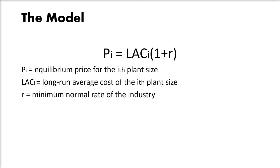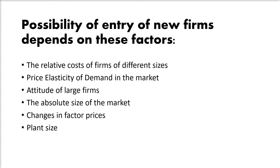If the entrant firm has a scale plant larger than the smallest firm in the industry, it would bring down the price, because the model assumes that established firms would continue to produce the same output. The additional output of the entrant would lower the price and the minimum rate of profit in the industry. The possibility of entry depends on several factors. As long as the scale plant of the entrant is smaller than that of the least efficient firm in the industry, the limit price would prevent it from entering, as the market price would not cover its LAC.